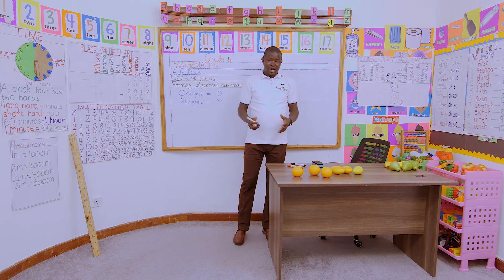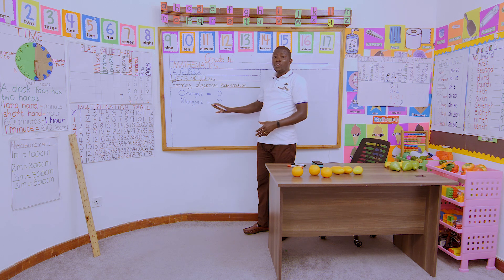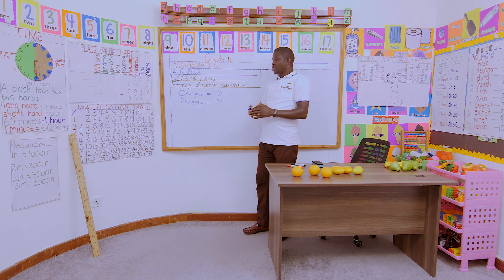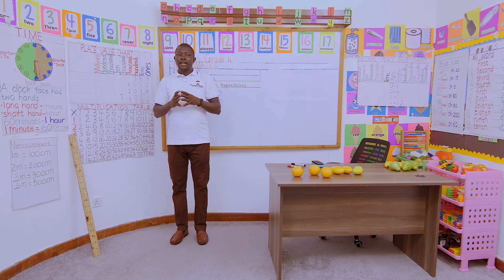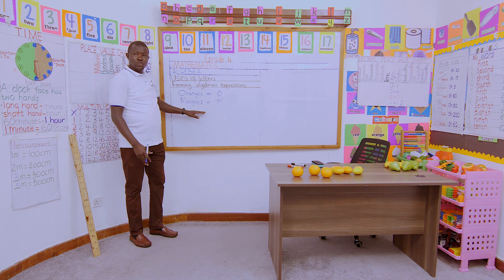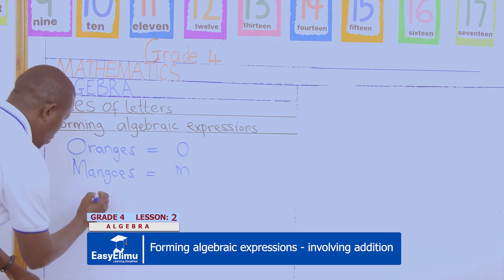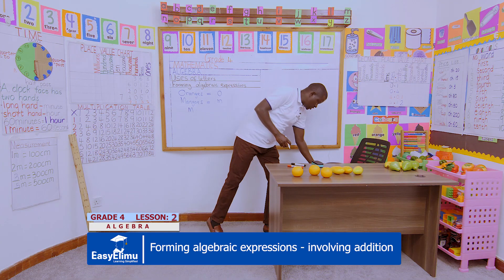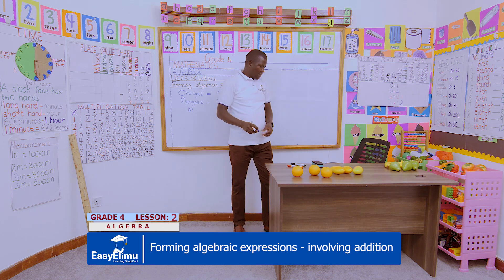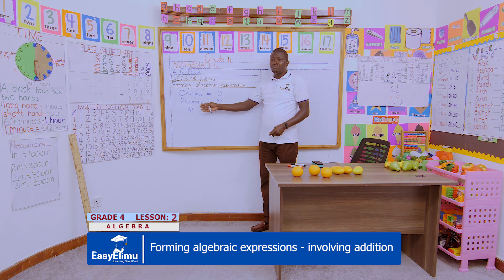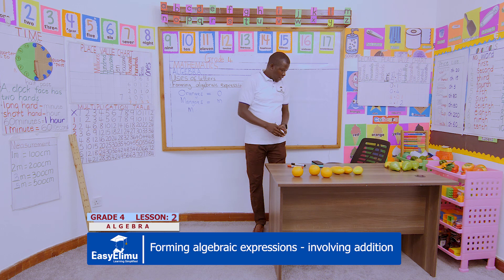Now, in our groups, how can we show the number of items we have all together? We want to bring them onto the board. Showing the number of items all together, we use addition because we are bringing them together. So we have O oranges and M mangoes, and we want to bring them together.